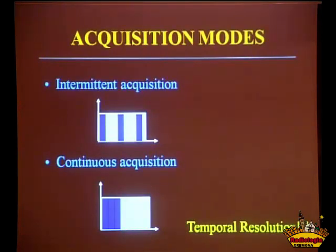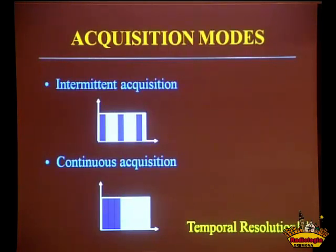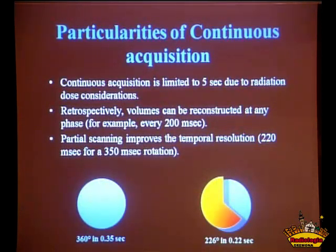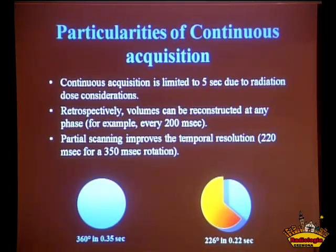We can use two types of acquisition modes: the intermittent acquisition, in which the patient moves and you have volumes acquired with a variable delay between them, or continuous acquisition. The choice is really based on temporal resolution. If you need a lot of temporal resolution, then you need to choose continuous acquisition. Continuous acquisition needs to be limited to a five-second exposure time due to radiation considerations, but the images can be reconstructed retrospectively in any phase, even faster than the top rotating speed of the x-ray tube — for instance, every 200 milliseconds.